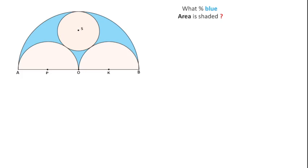Welcome to Definite Mind. In this question there are three semicircles and one circle. These two semicircles are equal. The center for this bigger semicircle is O, the center for these two semicircles is P and K, and the center for this circle is S. We have to find what percentage of this blue area is shaded.